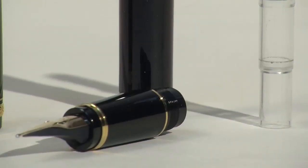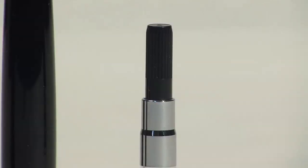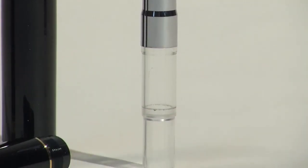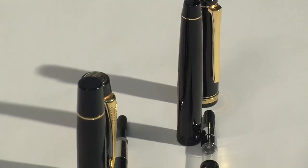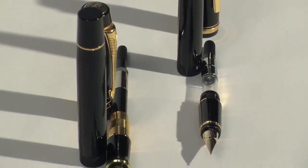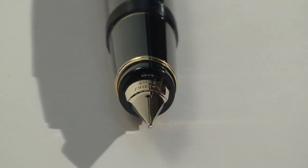The filling system is Pilot's proprietary cartridge converter system. The converter looks to be a sort of half-sized piston converter, although its actual capacity is not much less than that of the standard converter in a Parker Duofold Centennial: 0.9 milliliters versus 1.1 milliliters.